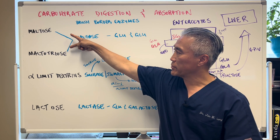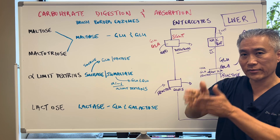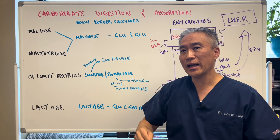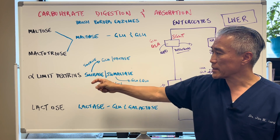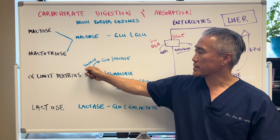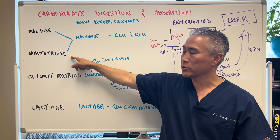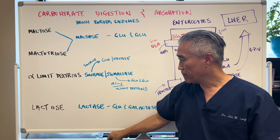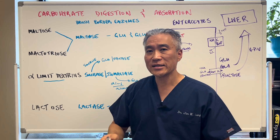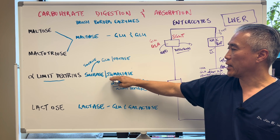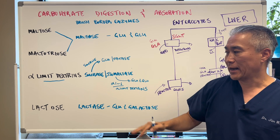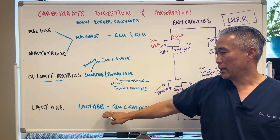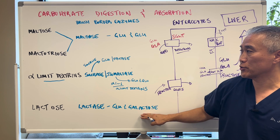Maltase breaks down maltose into glucose and glucose. Alpha-limit dextrins are broken down partially by sucrase, which also breaks down sucrose, maltose, and maltotriose. But isomaltase is what really helps break alpha-limit dextrins down, since this molecule has the 1,6 bond, which is primarily broken down by isomaltase. Isomaltase will break it into glucose and glucose. Lactose is broken down by lactase into glucose and galactose.